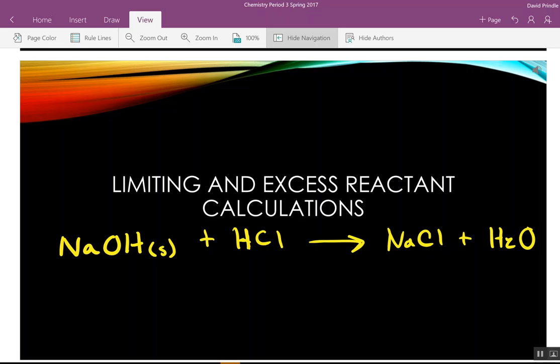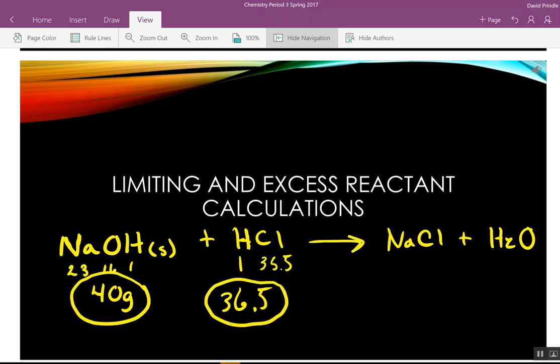Now, sodium hydroxide weighs 23 plus 16 plus 1, which adds up to what, 37? Or 40? Sorry. Is that right? 40 grams. What's HCl? 1 plus 35 and a half. 36 and a half. If I put 40 grams of sodium hydroxide in 36 and a half grams of HCl, the reaction should go to completion, because I've put exactly what I need in there.